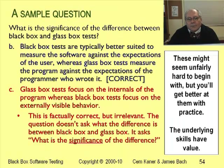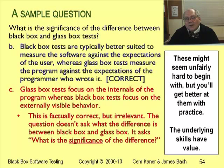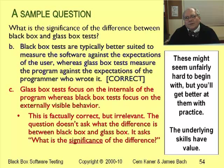The answer is B. The most common mistake is C. Answer C does give a true statement — glass box tests do focus on the internals of the program, and black box tests do focus on the externally visible behavior. But that's like saying that the sun rises in the morning. It does, but it's not relevant. The question doesn't ask what the difference is between black box and glass box; it asks what is the significance of the difference. Significance means what is the importance or the impact of the difference. Answer C doesn't address that. B does.